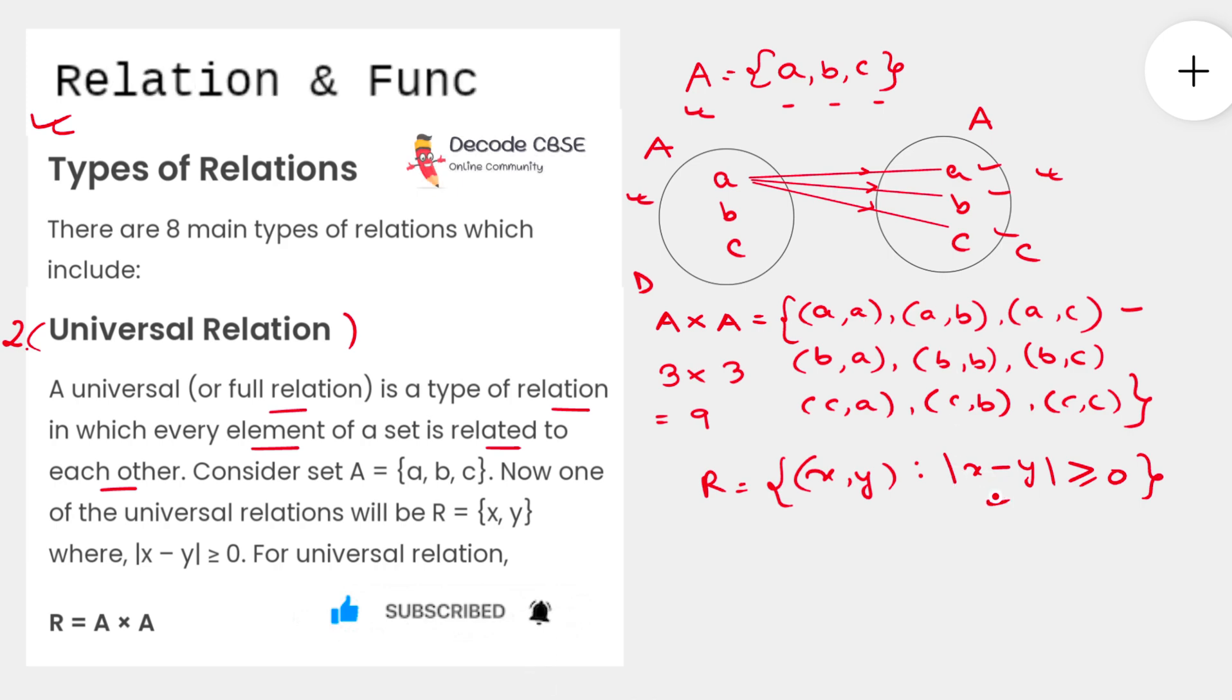Now if you closely observe, you will see that this particular condition is satisfied by all the ordered pairs. For instance, if we had numbers instead of alphabets, you would have seen that the modulus of the difference of any two numbers in this set is greater than or equal to 0, because we have a modulus so even if it is negative we end up getting positive, which will be greater than or equal to 0. So here we can see that this particular relation includes all the ordered pairs of A cross A.